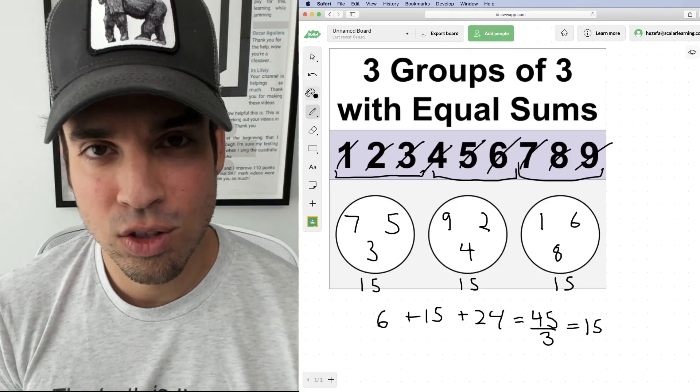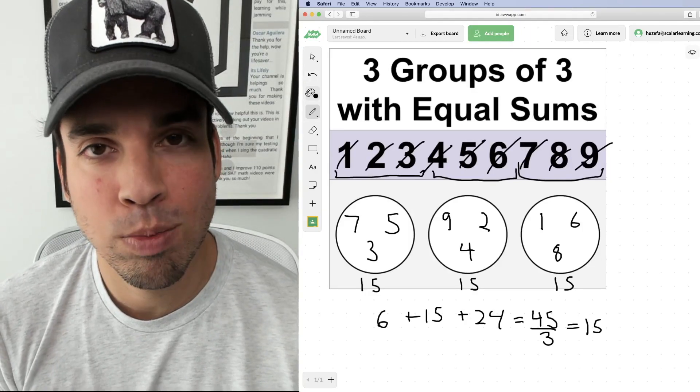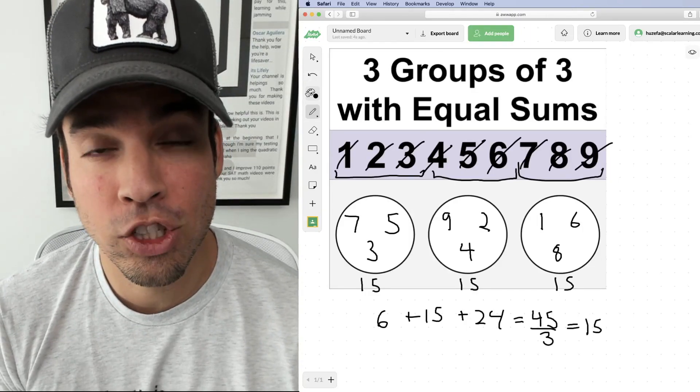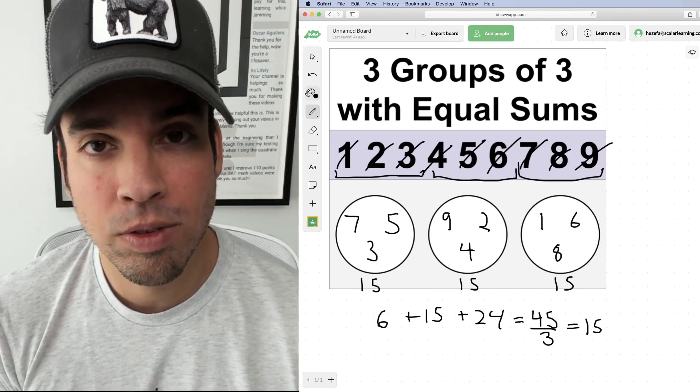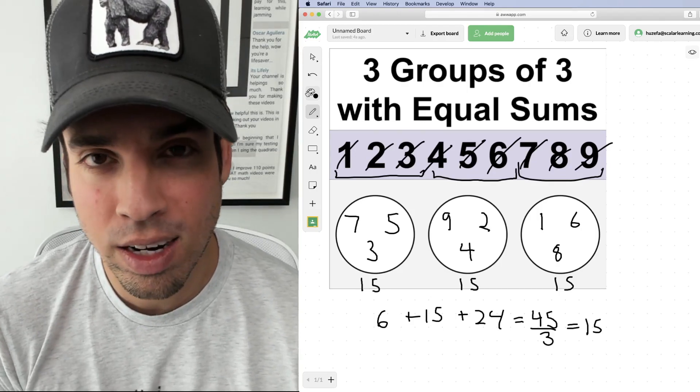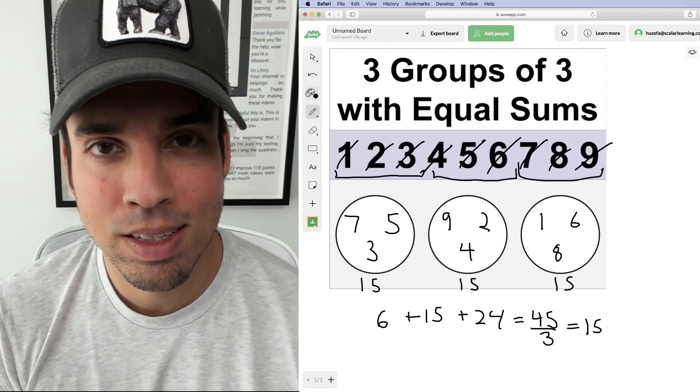Now just bear in mind that this is one of multiple possible solutions. There's different ways to arrange these numbers so that you get a nice clean sum of 15 for every group. But this is the way that I did it, and I hope that it made sense.